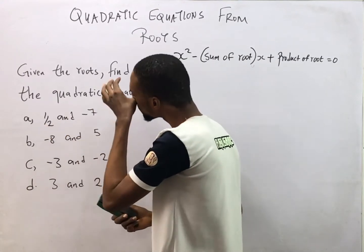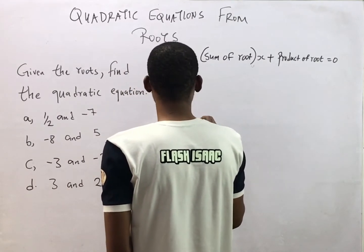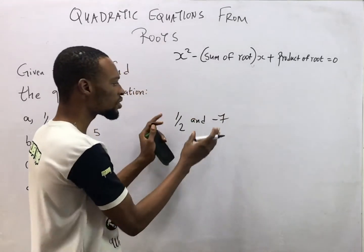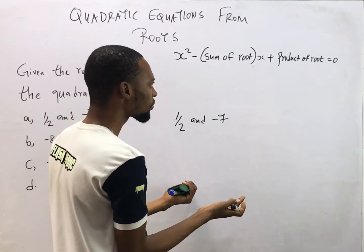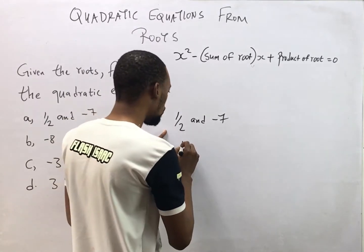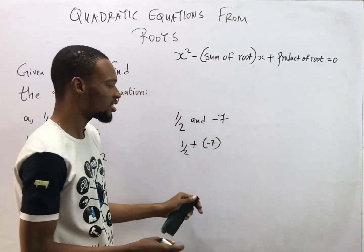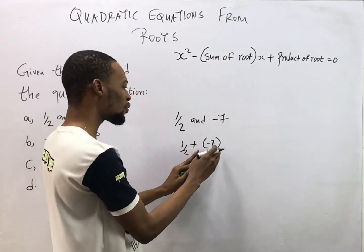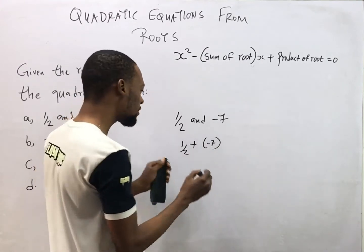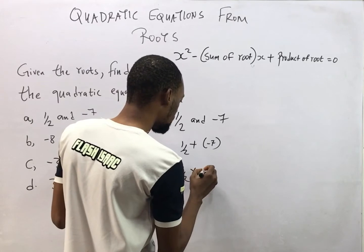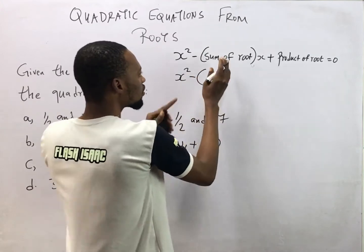Question A is asking us to find the quadratic equation whose roots are 1/2 and -7. These are the roots we are dealing with. The first thing we look for is the sum of roots: 1/2 + (-7). Don't forget — we are adding the roots but this root is negative, so we respect the sign. The product of roots is simply 1/2 × (-7).